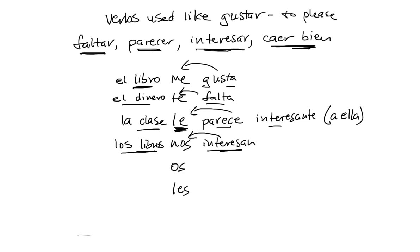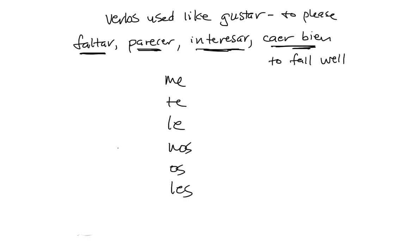Another very important verb that falls into this category structurally is the expression caer bien, which literally means 'to fall well.' Some people in familiar situations use gustar when talking about liking a person — you'd say Juan me gusta, meaning Juan pleases me. In an informal setting that's fine, but in a more formal setting you might get some laughs because of the nature of gustar, that is, pleasure.